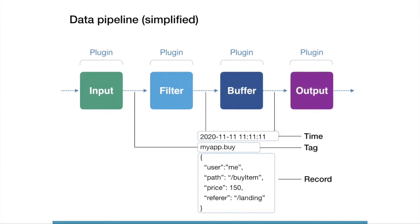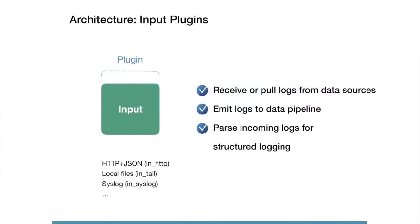This image shows the event processing flow in Fluentd. Incoming events pass through the pipeline from right to left. The input plugin is the start point of the data pipeline — it receives or reads data from data sources and emits logs into the pipeline. Importantly, input plugins parse logs for structured logging, so logs are converted into Fluentd events in the input plugin.